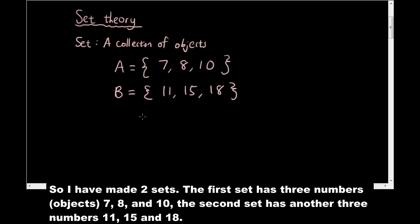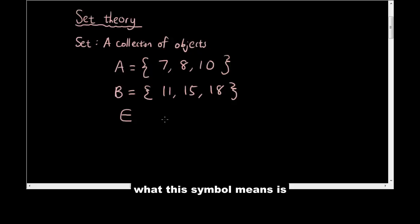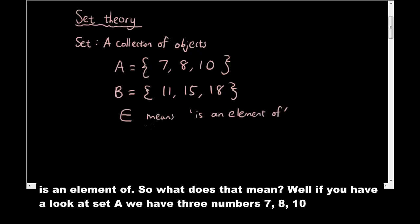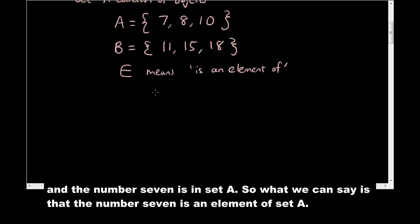Now the first symbol that I want to talk about is this symbol here that looks a little bit like an E. What this symbol means is 'is an element of'. So what does that mean? Well, if you have a look at set A, we have three numbers: seven, eight, and ten. The number seven is in set A, so what we can say is that the number seven is an element of A.